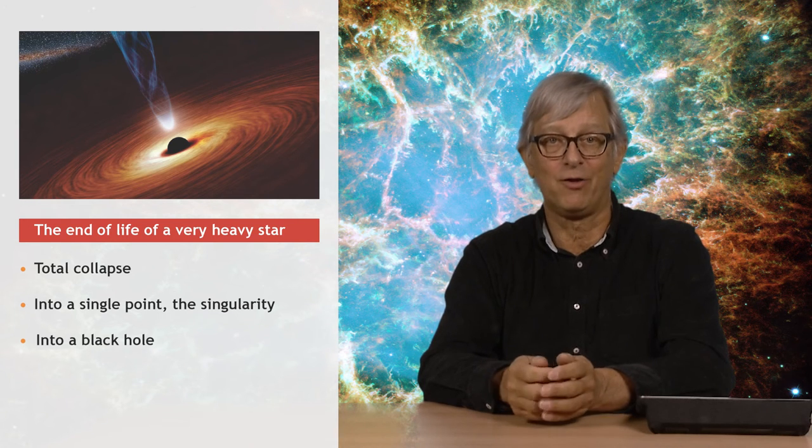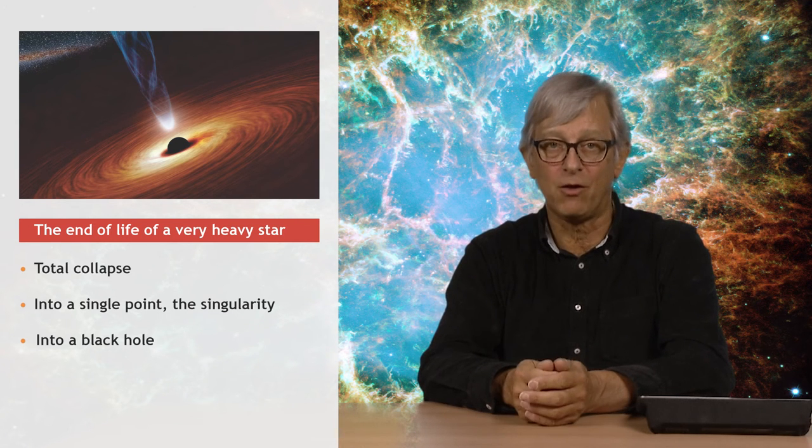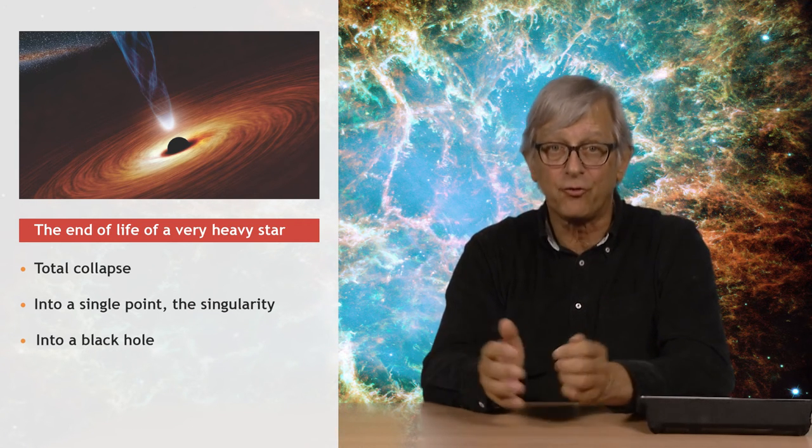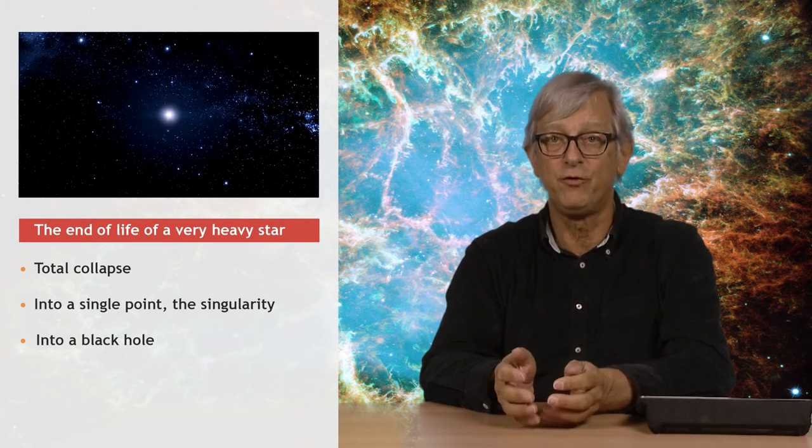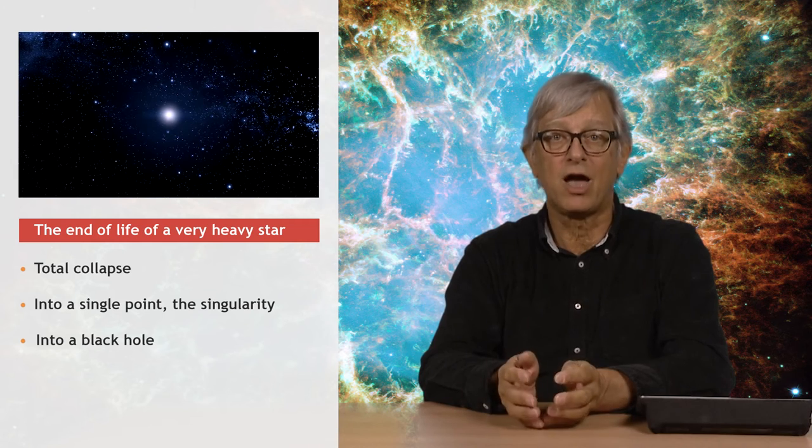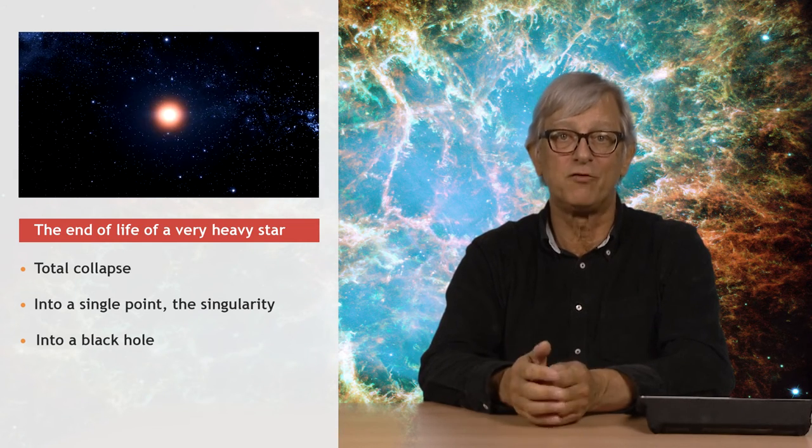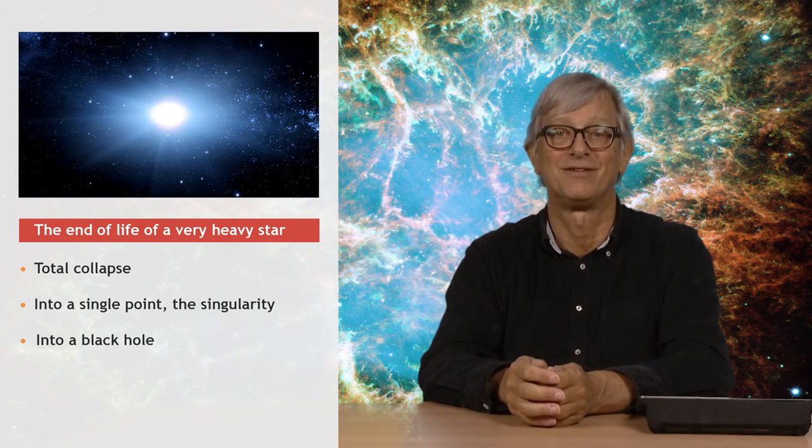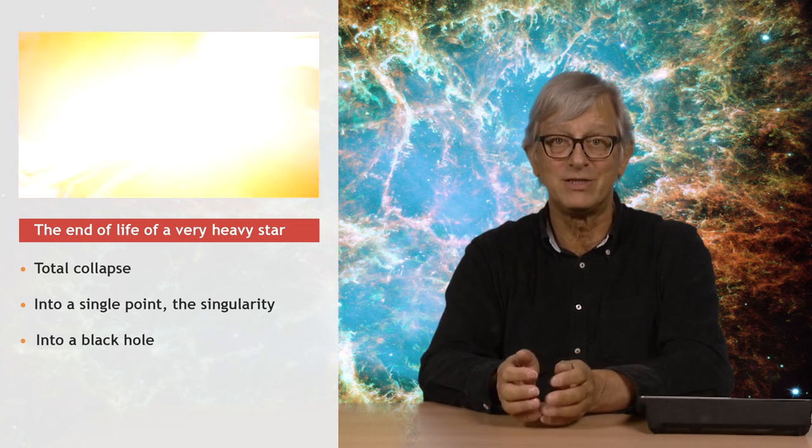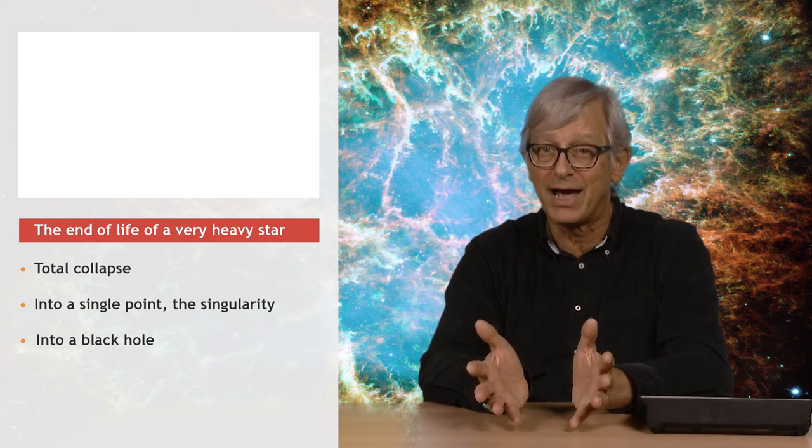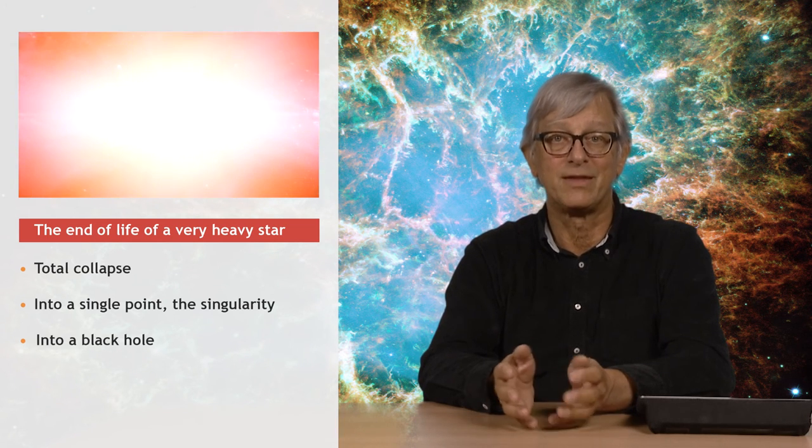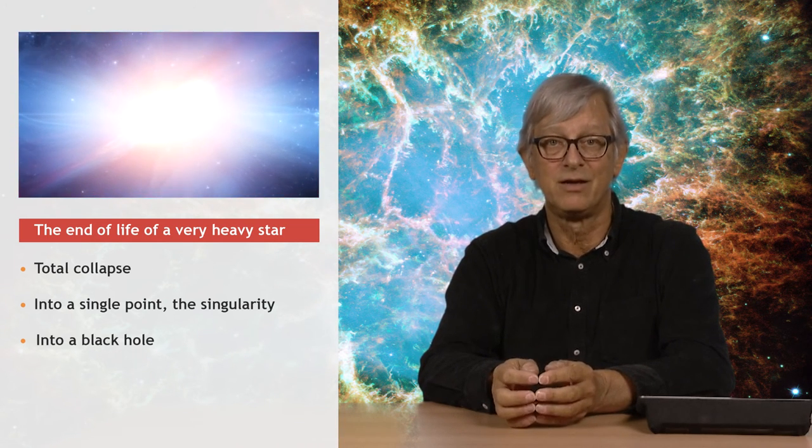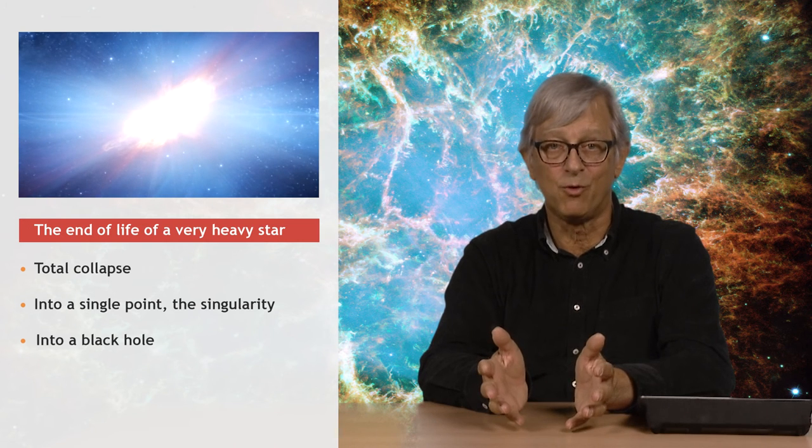While the core of the massive star collapses to form a neutron star or a black hole, its outer layers are thrown off in an enormous explosion, a supernova. For a few weeks or so, the explosion outshines its entire galaxy of hundreds of billions of stars. We can observe these explosions, they happen roughly once per century per galaxy, and we can see them across the universe. They tell us that a massive star died, but a neutron star or a black hole was born.